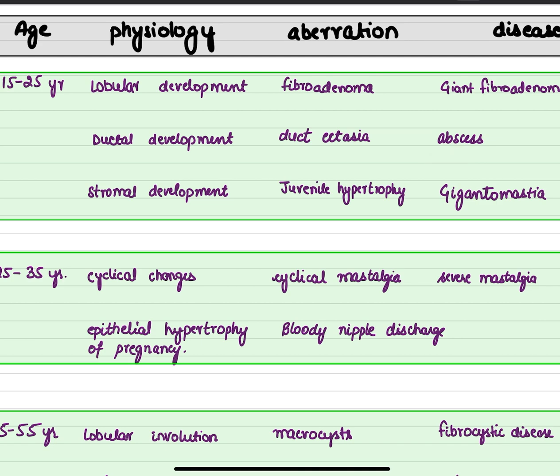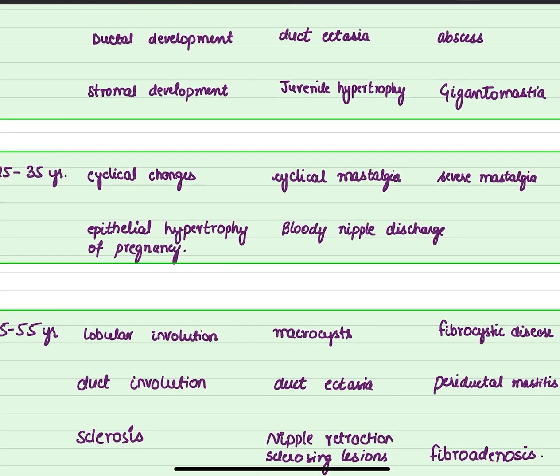Finally in this stage there is stromal development. Aberrations in stromal development will lead to juvenile hypertrophy, and if it occurs in large amounts it may form a very large breast — i.e., gigantomastia.